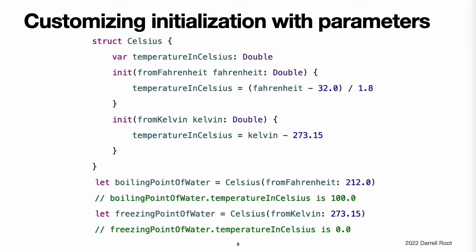Customizing initialization. You can customize the initialization process with input parameters and optional property types, or by assigning constant properties during initialization. You can provide initialization parameters as part of an initializer's definition to define the types and names of values that customize the initialization process.